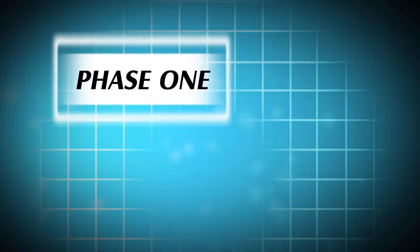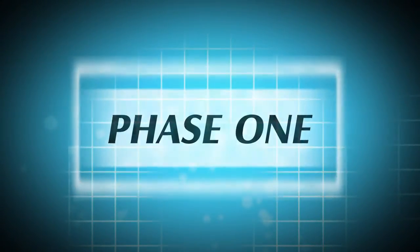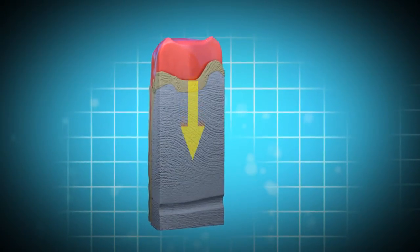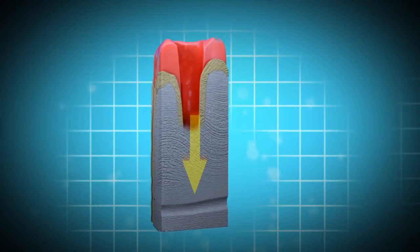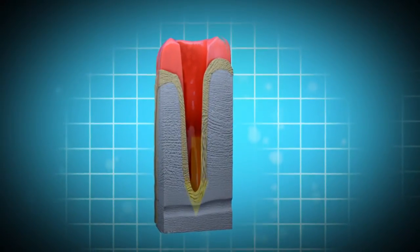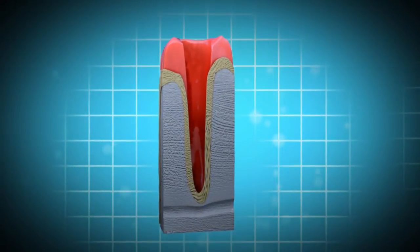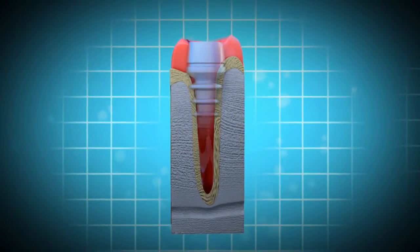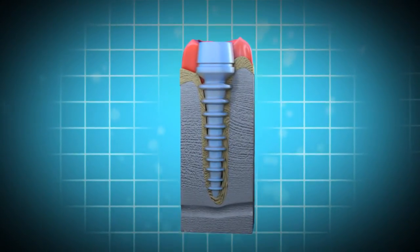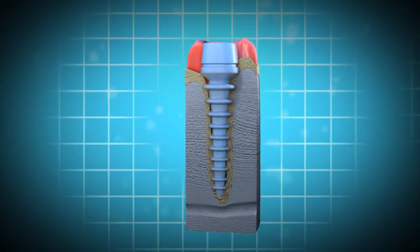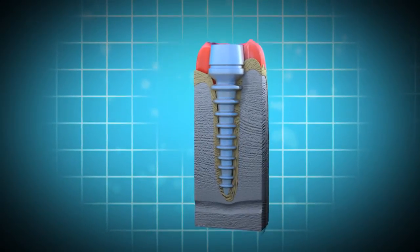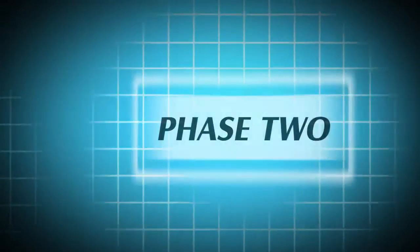There are two phases to the dental implant procedure. Phase 1: A small incision is made in the gum tissue, followed by creating a small pilot hole, which is then enlarged to the proper size. Then the dental implant is placed in the jawbone. The gum tissue is now closed, and the healing period begins.